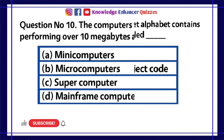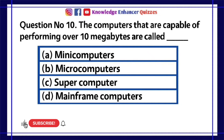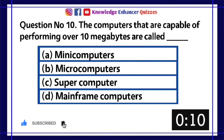Question number 10. The computers that are capable of performing over 10 megabytes are called dash. A. Mini computers. B. Micro computers. C. Super computer. D. Mainframe computers.